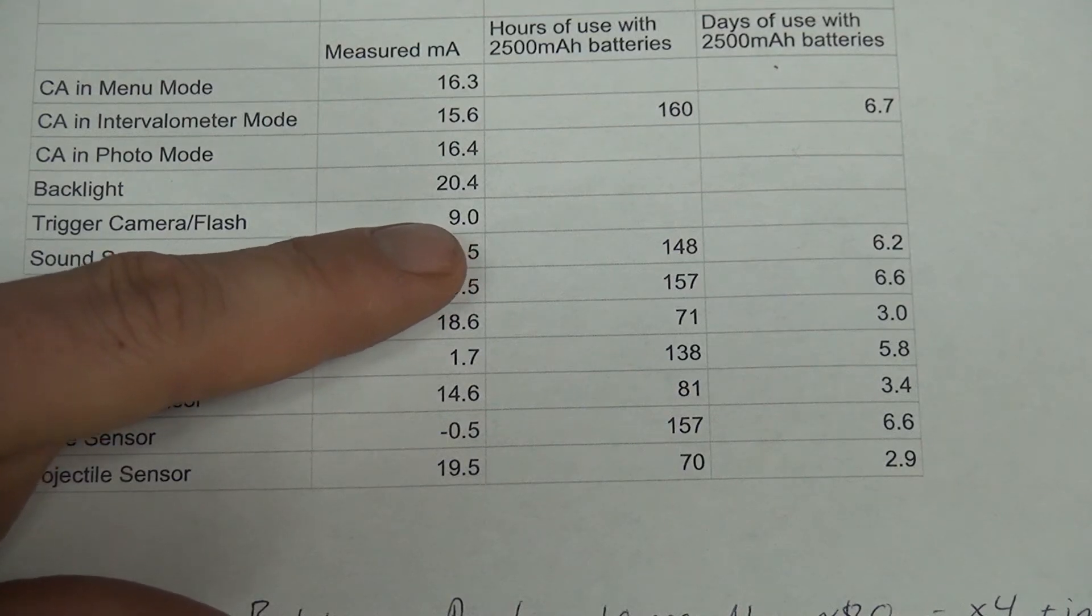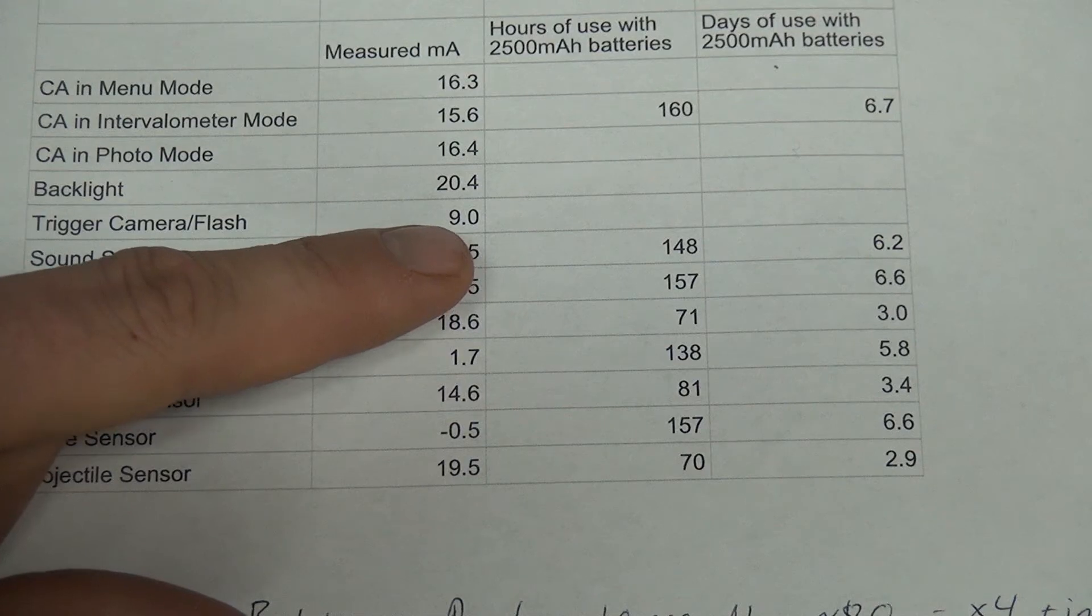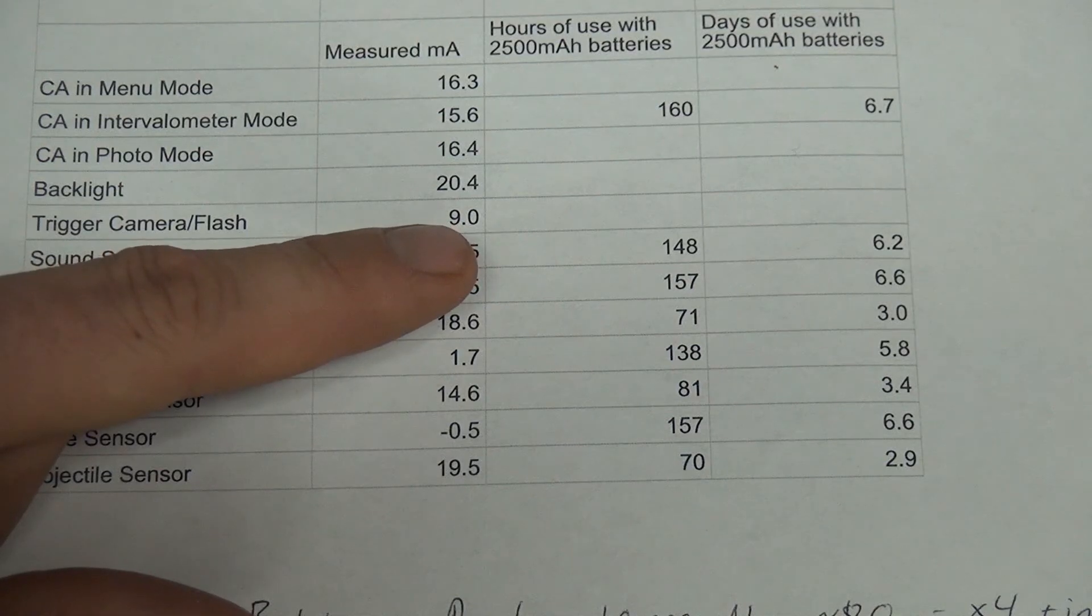When you're triggering a camera flash, it's actually using 9 milliamps to do that. That's because it's turning on multiple LEDs. It's got four LEDs that it has to turn on because two in the optical isolator and two that it actually shows you visually. So that's where those 9 milliamps are going.